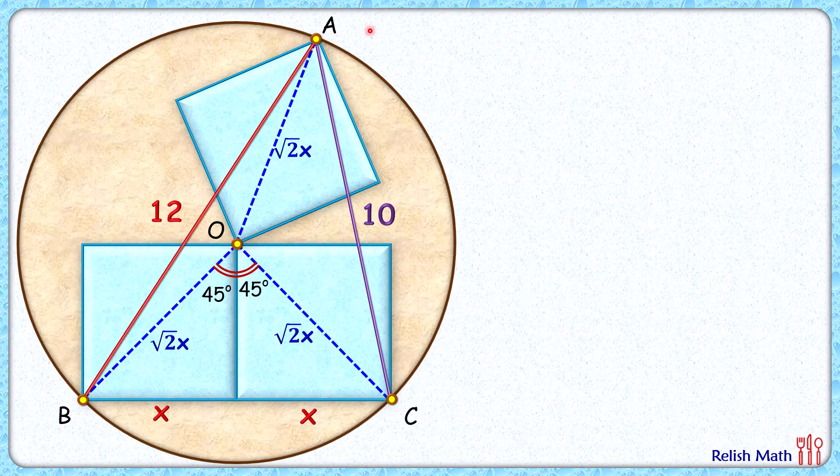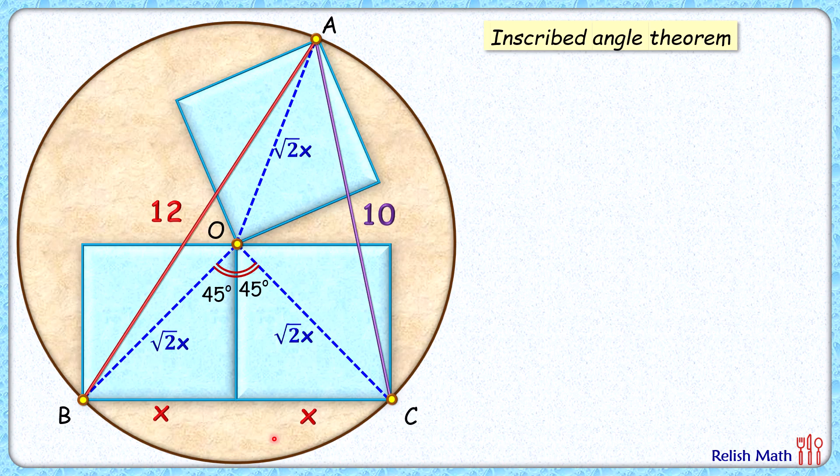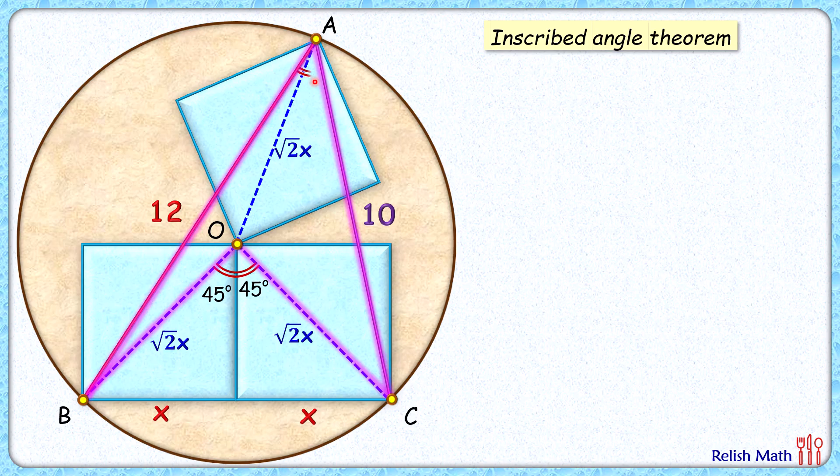If with respect to this circle, let's apply inscribed angle theorem. That is, chord BC here is making an angle of 90 degrees at the center, and as per the theorem, the same chord will make half of that angle on the circumference. So this angle here is half of 90, or 45 degrees.